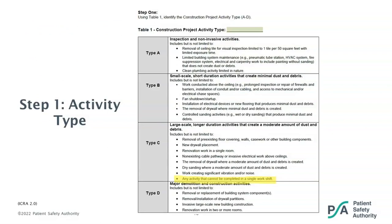This is what step one of the tool looks like. As you can see, they go into detail with examples of each type of project. Type A covers the most basic projects, including removing a ceiling tile for visual inspection, all the way up to Type D, which includes renovation work in two or more rooms and new building construction. It's also important to point out the highlighted section in Type C: any activity that cannot be completed in a single work shift is automatically classified as Type C. I've had projects I may have considered Type B, but had to classify them as Type C based on project duration.